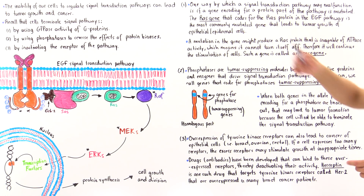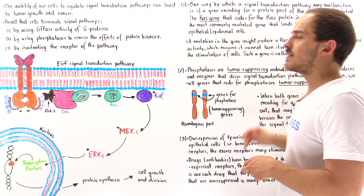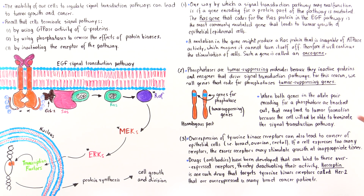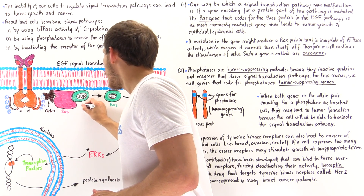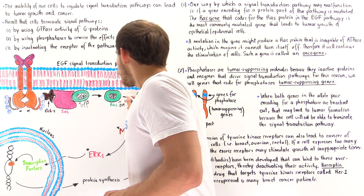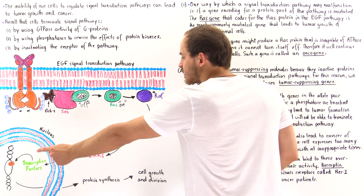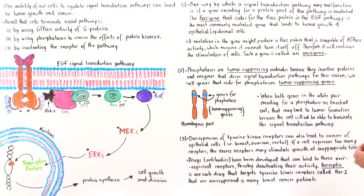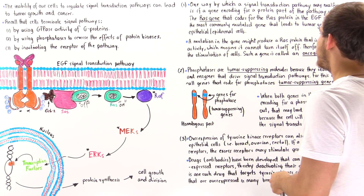The RAS gene that codes for the RAS protein in the EGF pathway is the most commonly mutated gene that leads to tumor growth of epithelial and epidermal cells. A mutation in the gene might produce a RAS protein that is incapable of GTPase activity, which means it cannot turn itself off after being activated. It will always remain on and always go on to activate RAF proteins, which drive the processes that lead to cell growth and division. These types of mutated genes that lead to the production of cells with cancer characteristics are known as oncogenes.